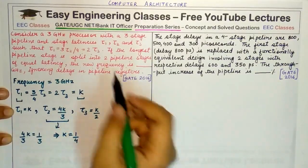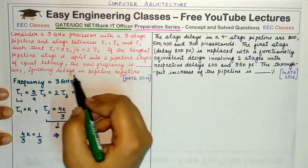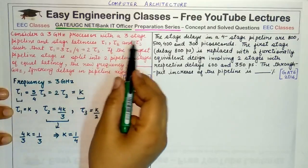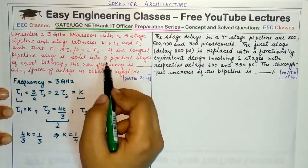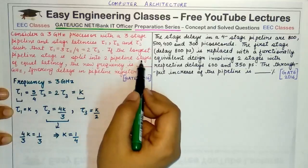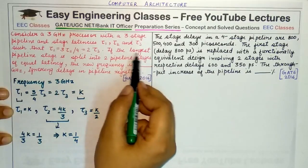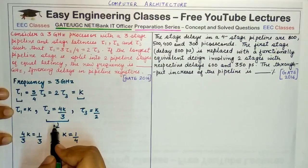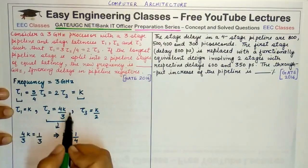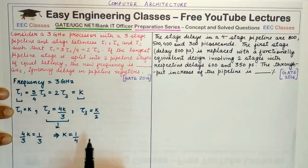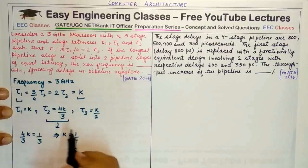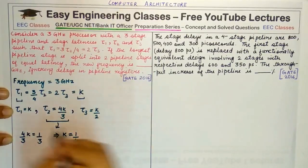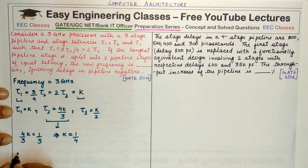The second part of the question says that if this three-stage pipeline is split into two pipeline stages—the longest pipeline stage is split into two pipeline stages. So what was the longest pipeline stage? This τ2 was the longest stage. So when we split it, I'll get now τ1 = K.